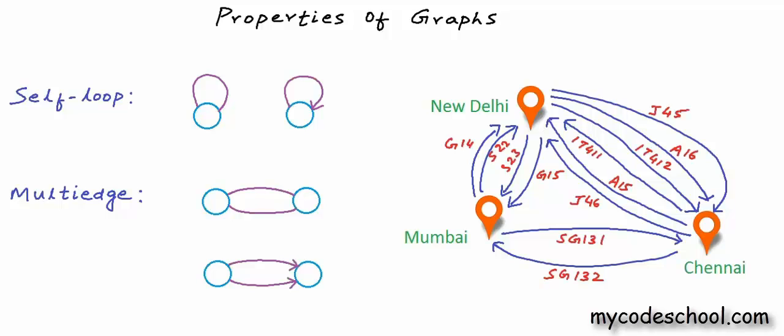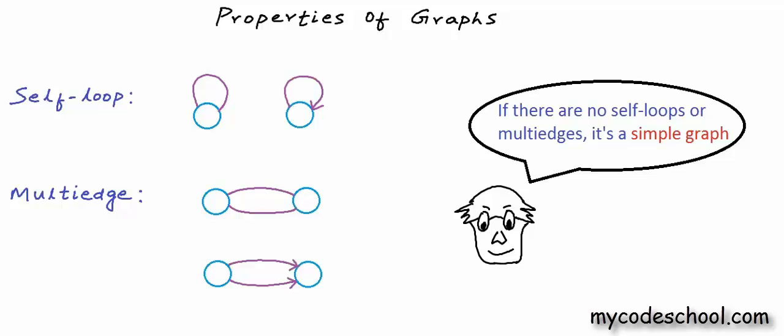I labeled edges here with some random flight numbers. Self-loops and multi-edges often complicate working with graphs — their presence means we need to take extra care while solving problems. If a graph contains no self-loop or multi-edge, it's called a simple graph. In our lessons, we will mostly be dealing with simple graphs. Now I want you to answer a simple question: given the number of vertices in a simple graph, what would be the maximum possible number of edges?